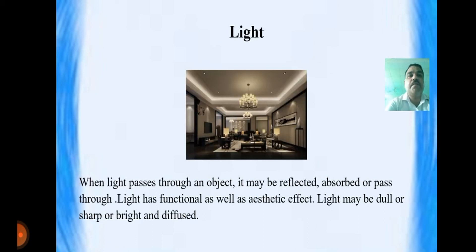The next element is light. When light passes through an object, it may be reflected, absorbed, or passed through. Light has functional as well as aesthetic effects. Light may be dull or sharp, or bright and diffused.